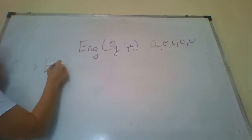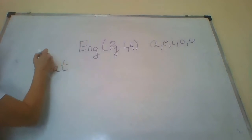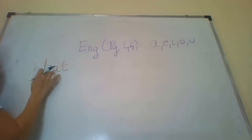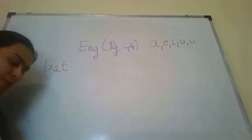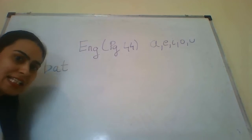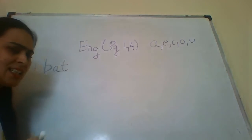B-A-T. Bat. So over here the vowel is A. Our first word is B-A-T, bat. Now can you think of more words which have the vowel A in them?